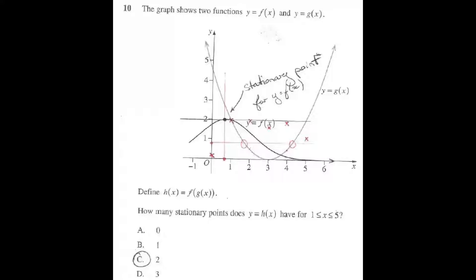Then we're told to define a new function h(x) which is the composite of the two, so it's f of g of x. And then we're asked how many stationary points does this new function h of x have between x being between 1 and 5?